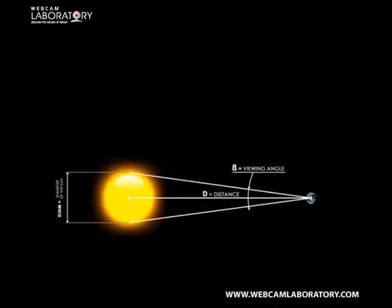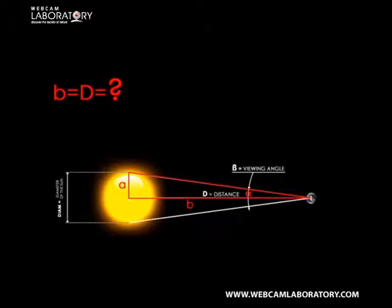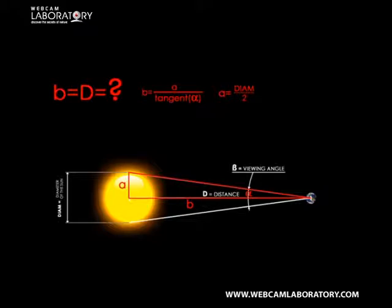Using the two pieces of data, we can set a right-angled triangle up, one side of which is half of the diameter of the Sun, and the other one is the distance between the Sun and Earth — what we are looking for is the length of side B of the triangle. We can calculate side B by knowing the length of one other side and one angle of the right-angled triangle. The easiest way is using the formula B equals A divided by tangent alpha, where A equals half of the diameter of the Sun and alpha is half of the measured angular diameter.